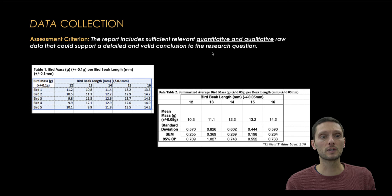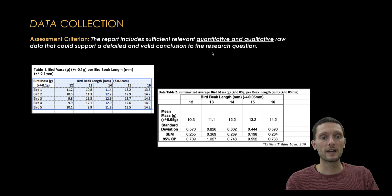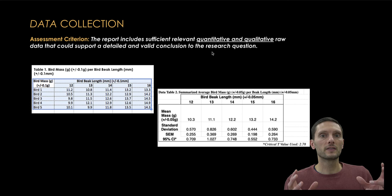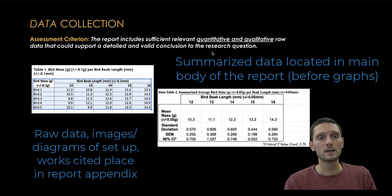The second table, table two, is the summarized data, which contains the statistical calculations done based on the raw data — mean, standard deviation, standard error of the mean, and 95% confidence interval. It's really important that both units and uncertainties appear in the title and within the table. The summarized table should be included in the main body of the report, whereas the raw data should be placed in the appendix, as it doesn't need to be in the main body.